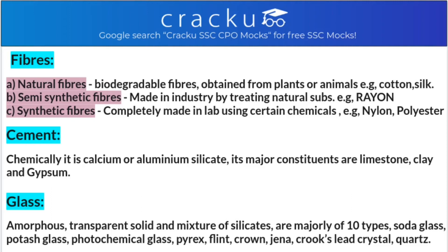Eye lenses and goggles are made of photochromatic glass. Glass used in windows, bottles, dishes, tube lights, domestic uses, and utensils is soda glass or soft glass.